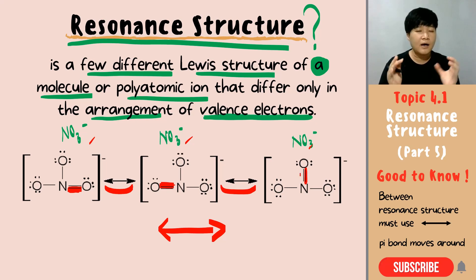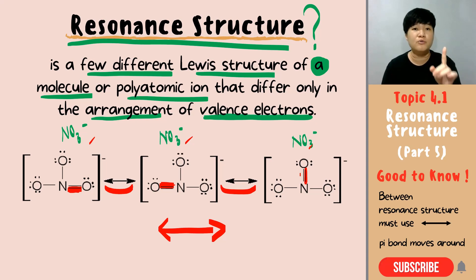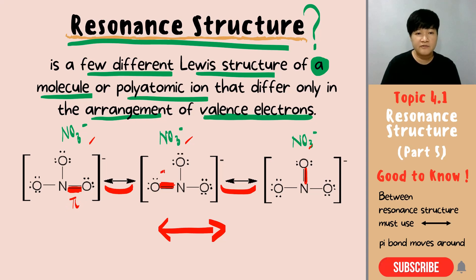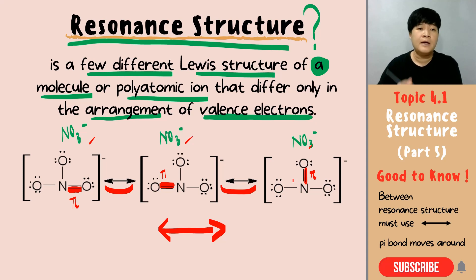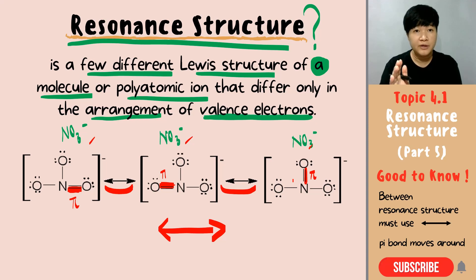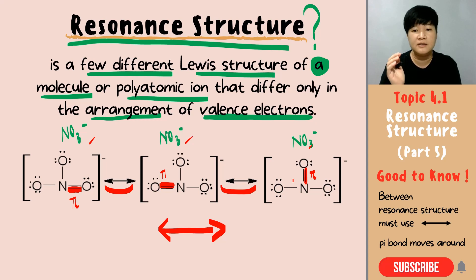So how do you know that you're going to have a resonance structure? You need to draw your Lewis structure correctly — they must have a pi bond for you to move around. Then you can have a resonance structure. Resonance structures are always very stable; if your molecule or polyatomic ion has a resonance structure, it is always more stable than the others.